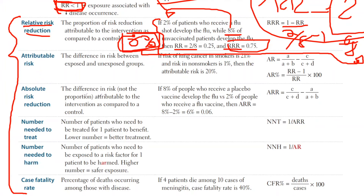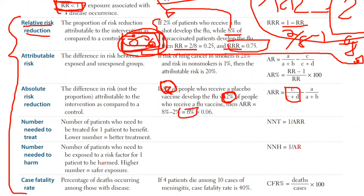Now for absolute risk reduction: what if we want to report that six percent directly? We just take the proportion of those unexposed who develop the disease — in this case eight percent — minus those who are exposed (vaccinated) who develop the disease — in this case two percent — giving us six percent. So we can say the absolute risk reduction of the flu vaccine is six percent. The formula is simply: proportion unexposed who develop disease minus proportion exposed who develop disease.